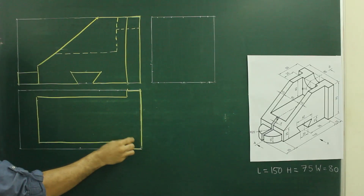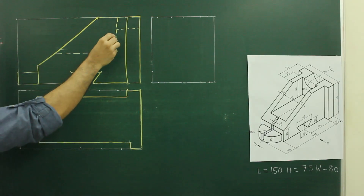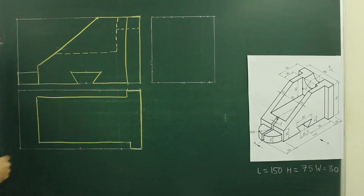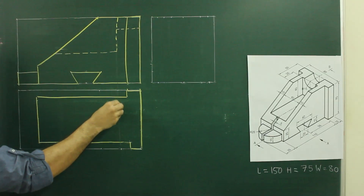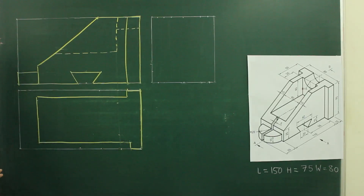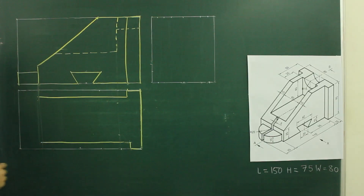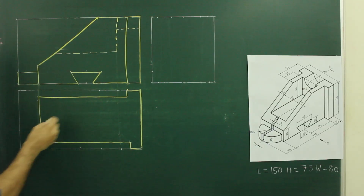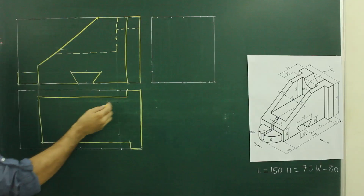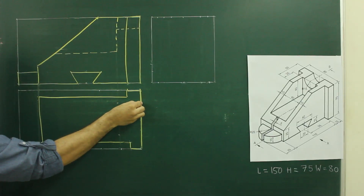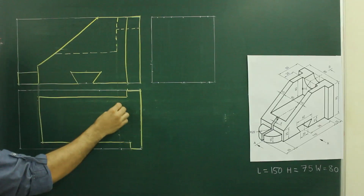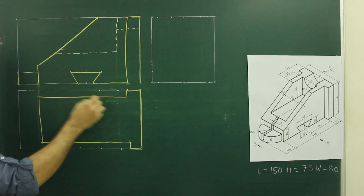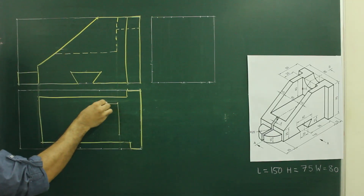This will be 10, this will be dark. Then we can project from this part, again we can take 10 on both sides.